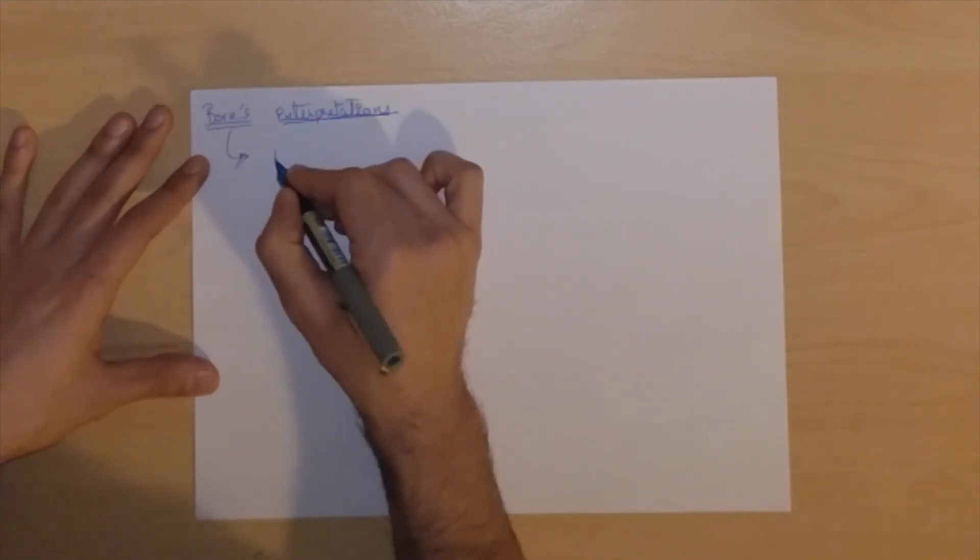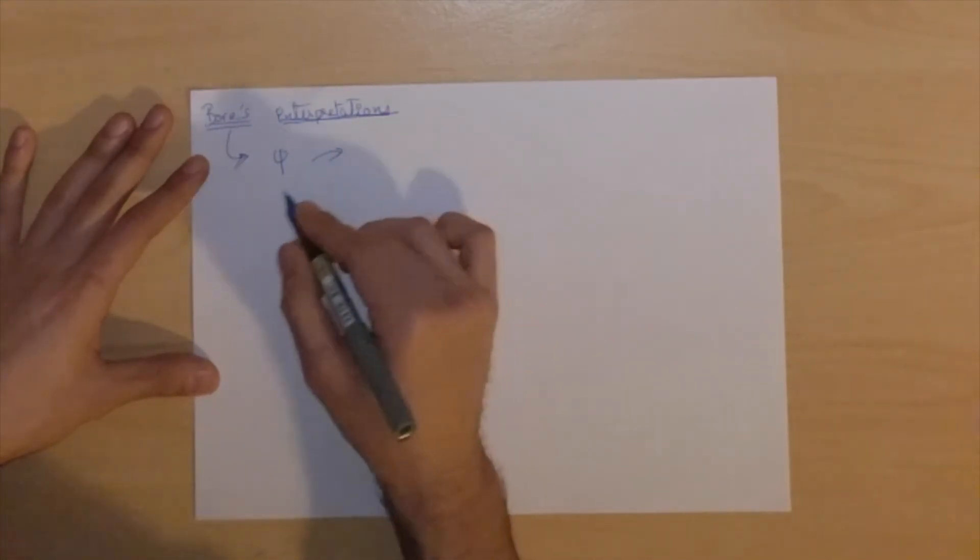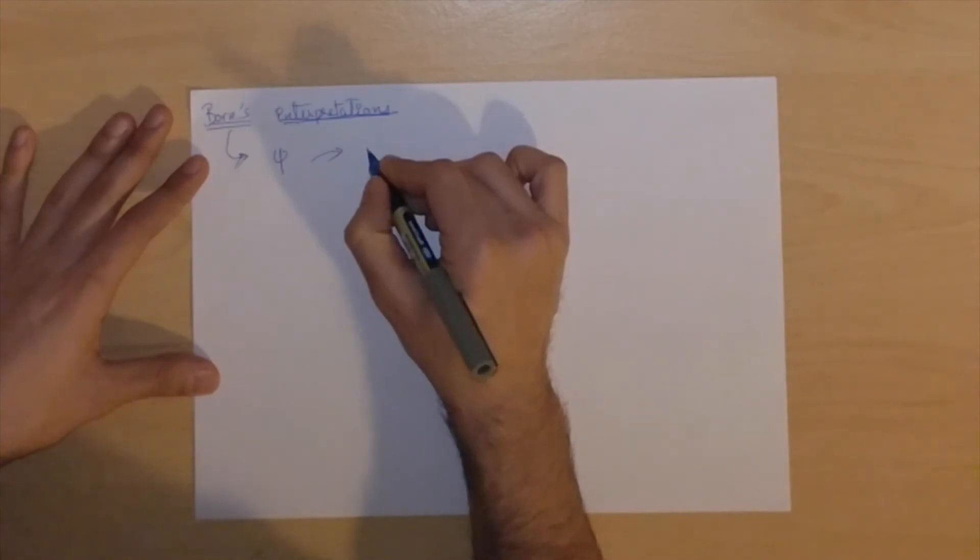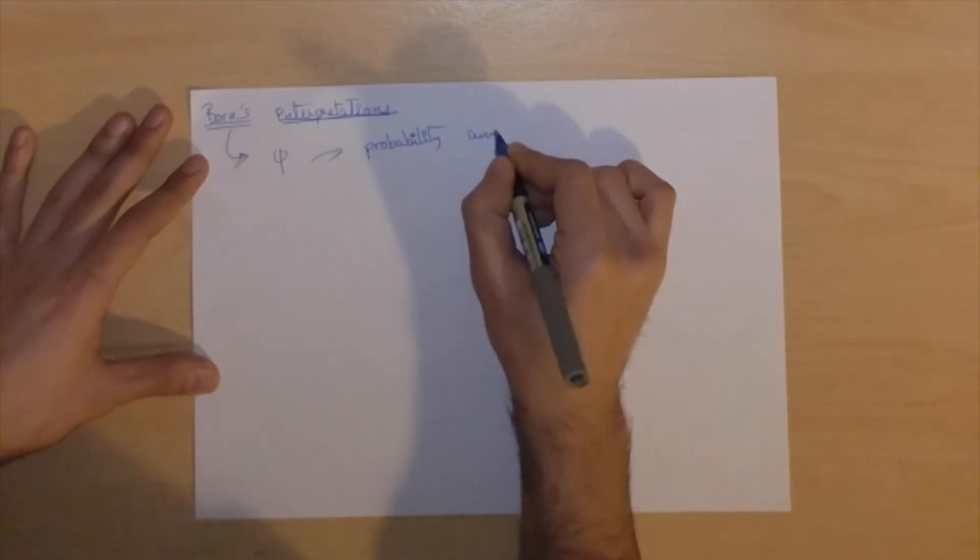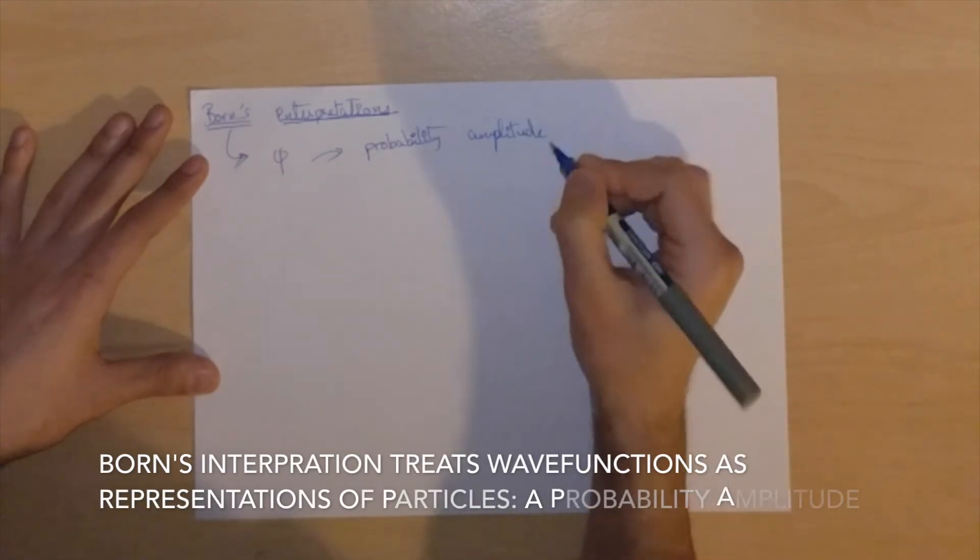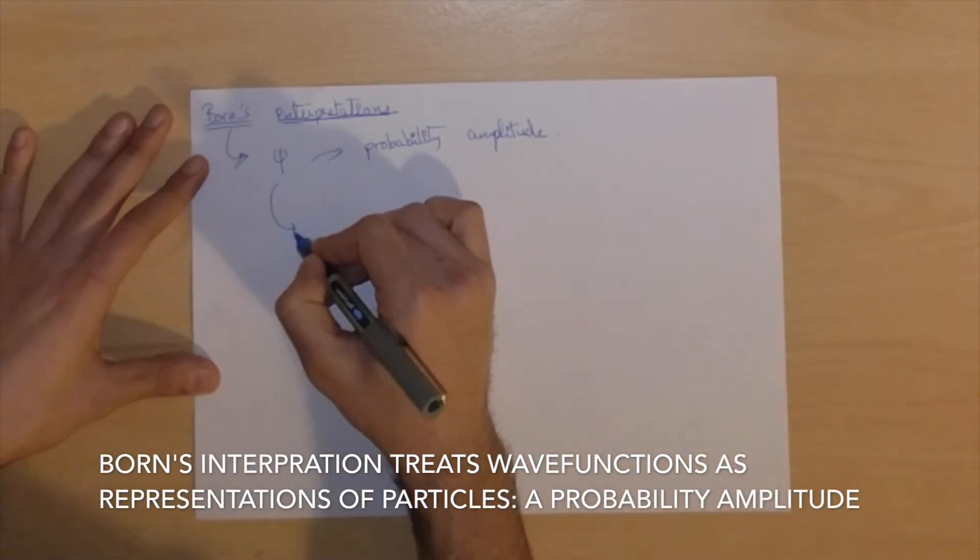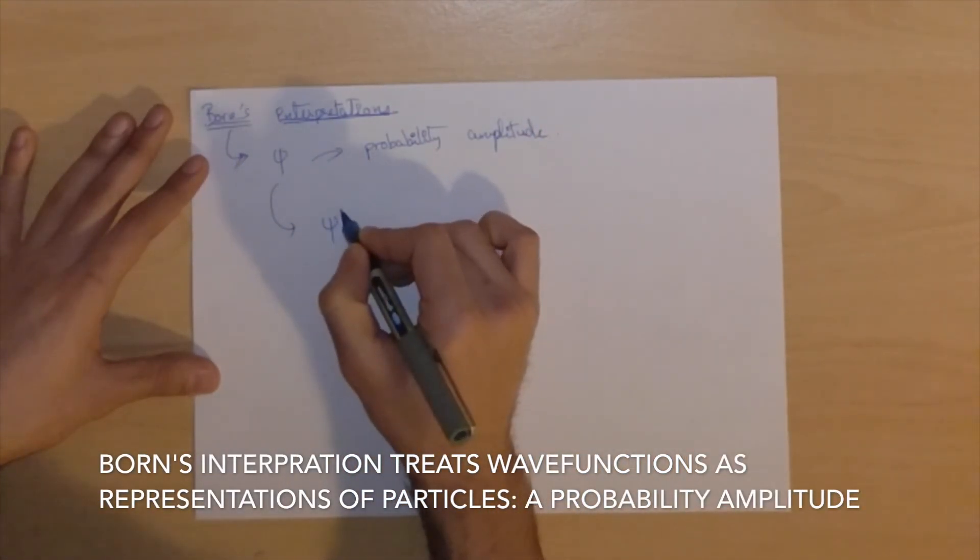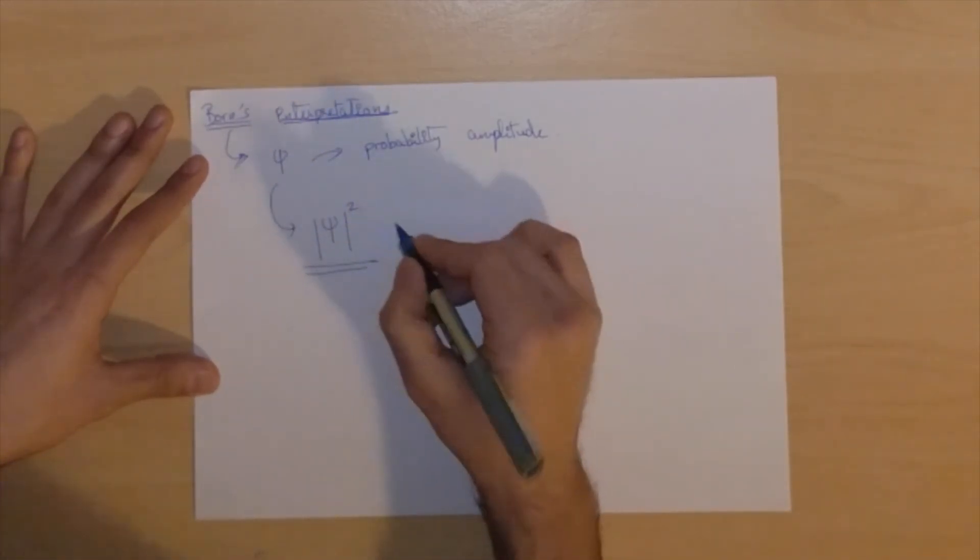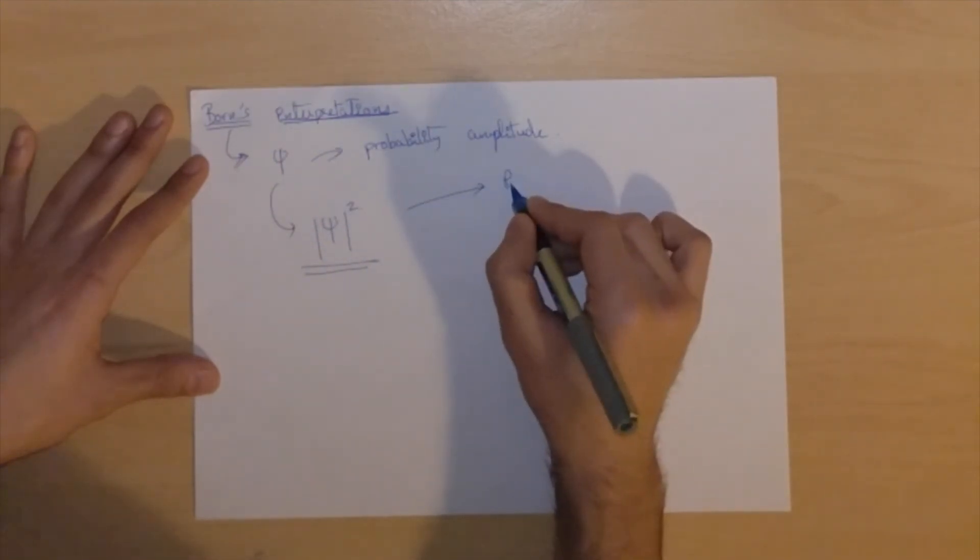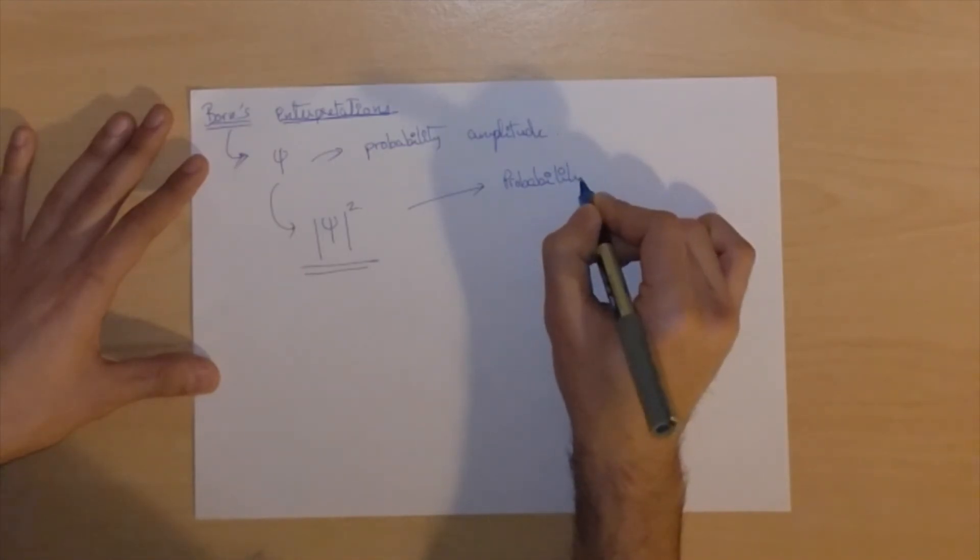So the Born interpretation treats the wave function, which contains information about a particle, as a probability amplitude. Now this by itself doesn't make much sense, but when you square the wave function, it gives you the probability of finding a particle.